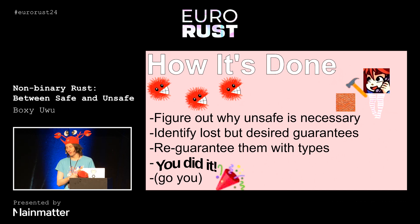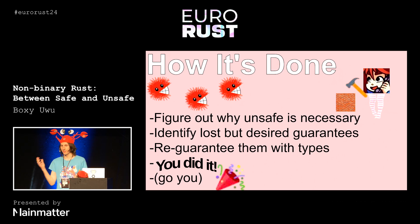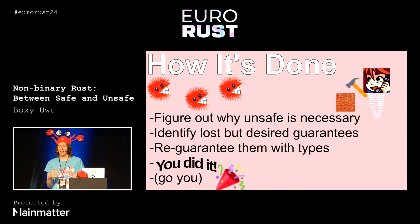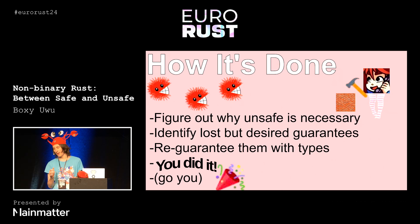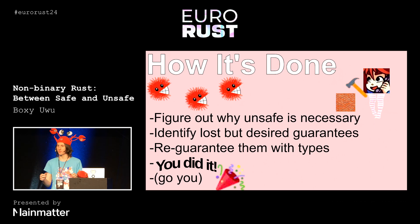Once you've identified why you're using the unsafe code, you can try and figure out if all of the safety invariants you're having to reason about to ensure your code is correct are actually relevant for the reason why you're writing unsafe code. If you're using raw pointers instead of borrows, you've given up a bunch of guarantees, and you want to make sure that you actually care about giving up all of those guarantees, and it's not just one specific thing you want to get rid of.